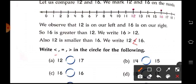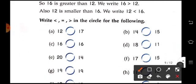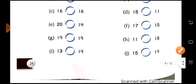Write less than, equal to, or greater than in the circle for the following. So here 12 is less than 17, so which sign here? Yes, this sign. Then 14 is less than 15. Now 16 is equal to 16. Now 18 is greater than 11. So in this picture we will do the rest of the sums.